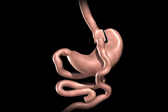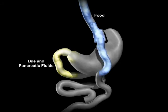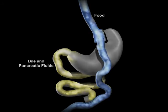The upper portion of the small intestine is reconnected to the lower portion of the intestine. The bile and pancreatic fluids from the liver and pancreas allow food to be completely digested.